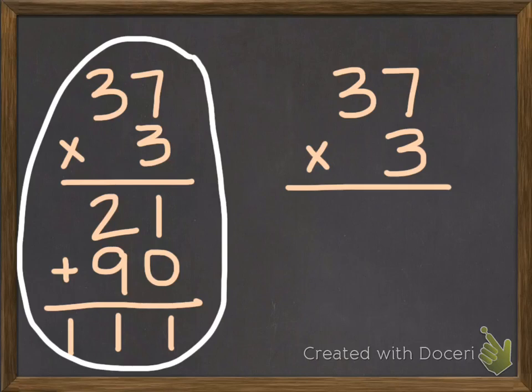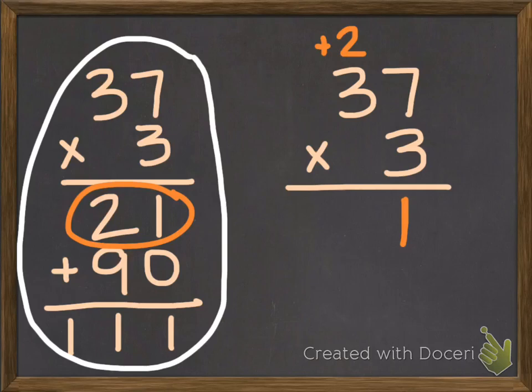The first step in the standard algorithm is to multiply the ones, 7 times 3. Okay, 7 times 3 is 21. In this case, I'll put the 1 in the ones place, and I'm going to regroup the 2 over here into the tens place. So I still have 21, it's just that I've written the ones below the line and the tens above the problem.